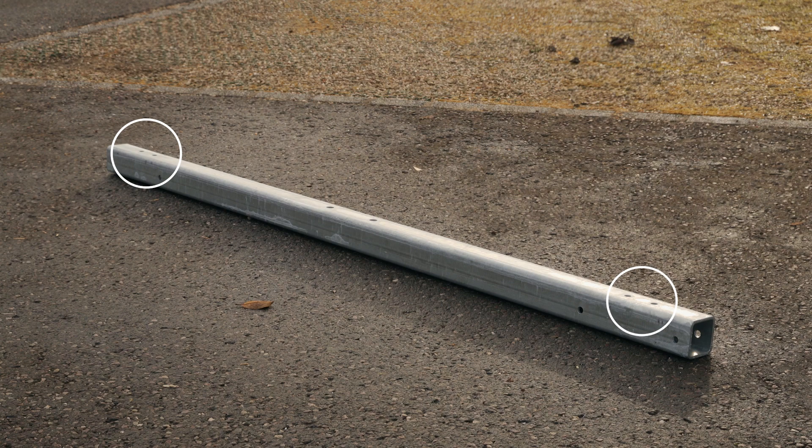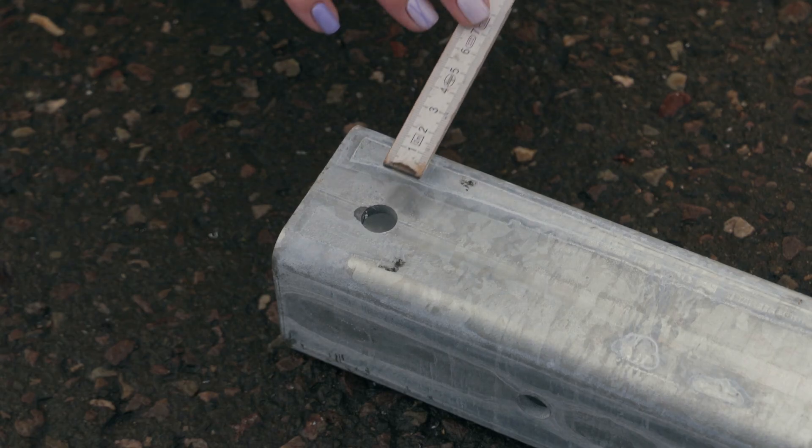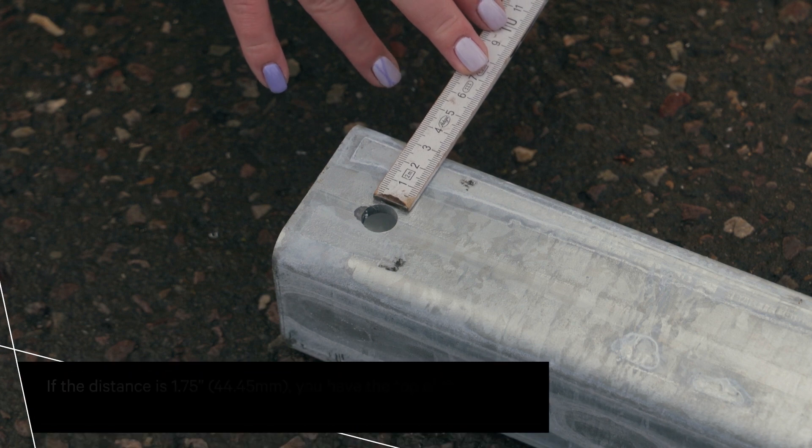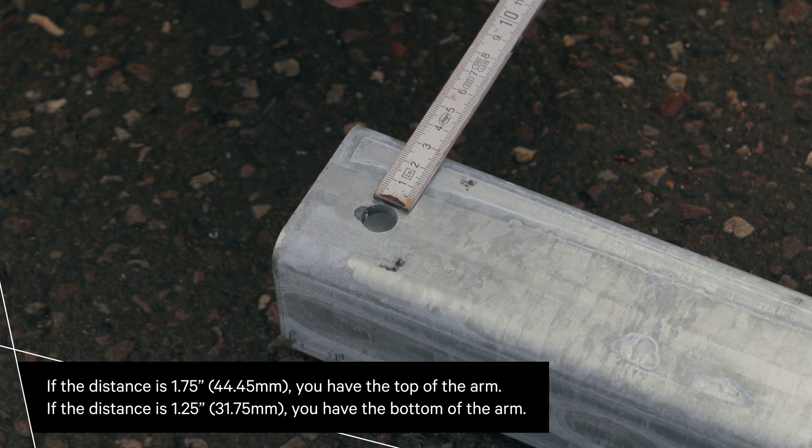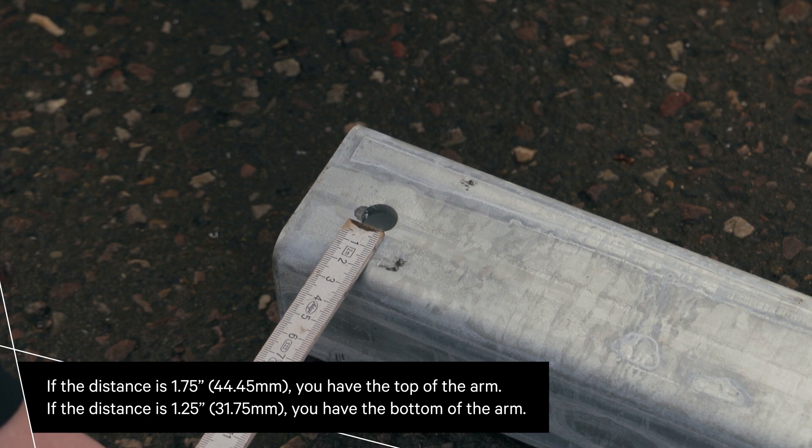Identify the correct orientation of the tube from the holes. The holes in the lower arm tube are slightly offset. Identifying this will ensure you bolt the brace mounting tabs in the correct location.